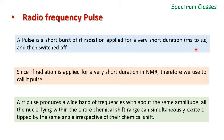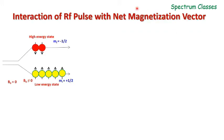One more important point about the radio frequency pulse: if the pulse is applied in the microsecond range, then it covers the entire chemical shift range of the nuclei present in the sample — that is known as a hard pulse. For the millisecond range, the pulse is generally applied to excite a particular type of nuclei, and that is called a soft pulse. Let's start with the interaction of the radio frequency pulse with the net magnetization vector.